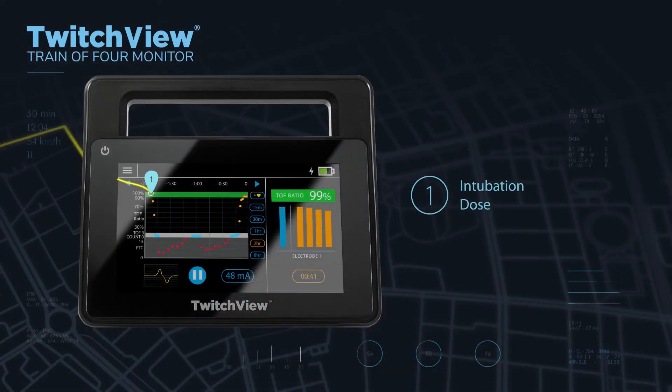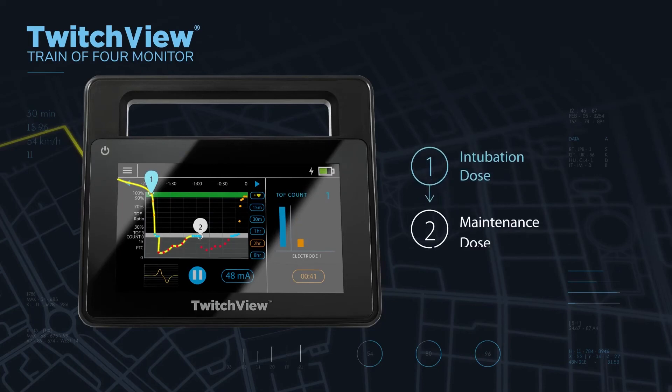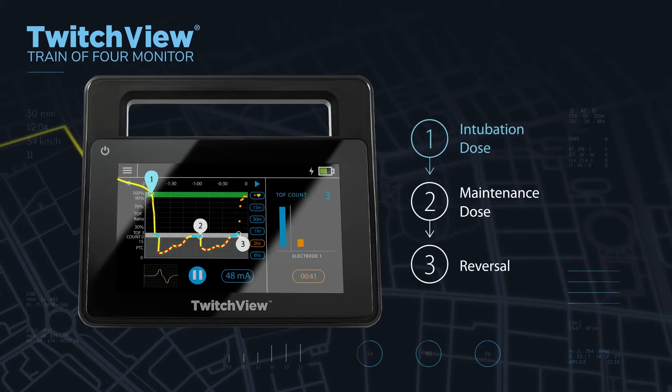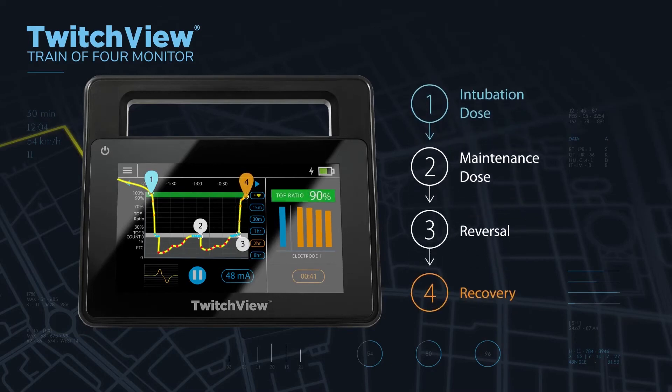Using real-time measurements and the patient-specific trend plot as a guide, you can titrate paralytic to proactively manage a desired depth of block and determine the optimal reversal drug and dosage.